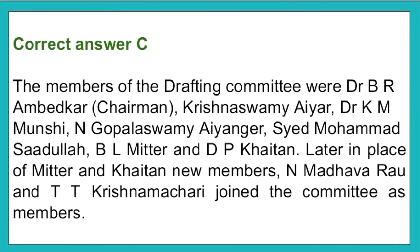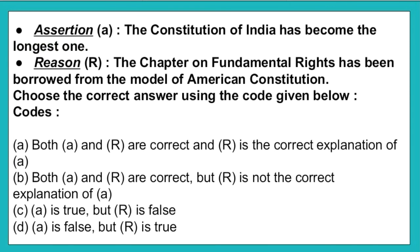The next question — assertion and reason: Assertion A: The constitution of India has become the longest one. Reason R: The chapter on fundamental rights has been borrowed from the model of the American constitution. Choose the correct answer — Option A: both A and R are correct and R is the correct explanation of A. Option B: both A and R are correct but R is not the correct explanation of A. Option C: A is true but R is false. Option D: A is false but R is true. The correct answer is option B — both A and R are correct but R is not the correct explanation of A.